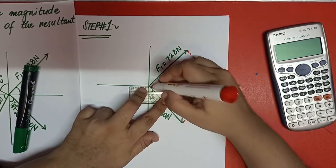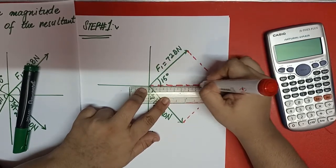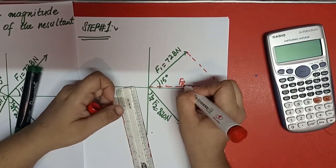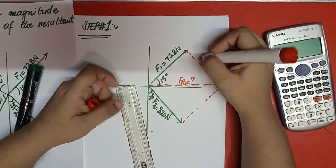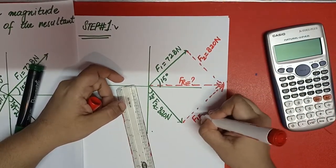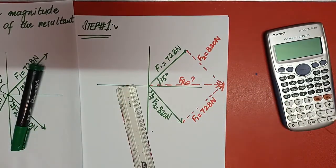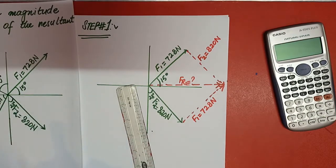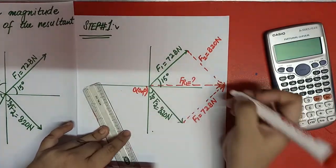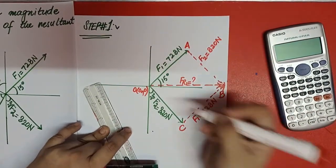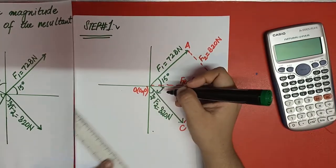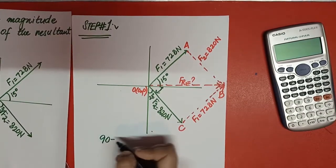FR1 is unknown right now, so we draw an imaginary FR1. If this side is F2 = 820 N and this side is F1 = 728 N, we need to find this angle. This is origin O, this side is B, this is A, and this is C. To find the angle: 90 degrees minus 28 degrees equals 62 degrees.